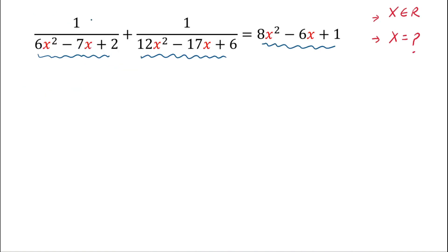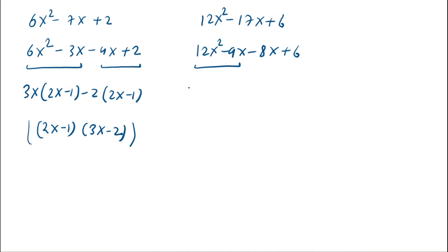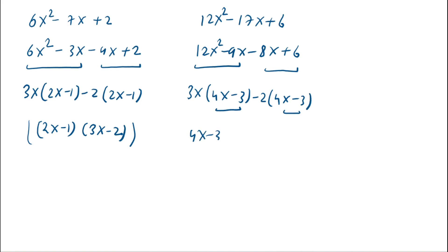Now we factorize 12x² - 17x + 6. Applying the middle term split: 12x² - 9x - 8x + 6. Taking 3x common gives (4x - 3), and taking -2 common also gives (4x - 3). So (4x - 3) is common, and taking it out we get (4x - 3)(3x - 2).